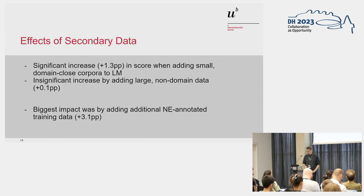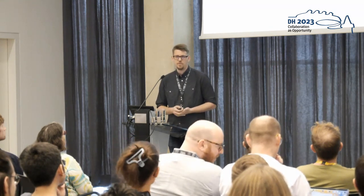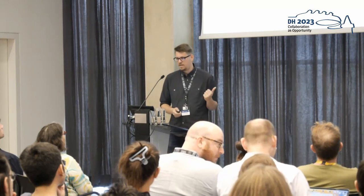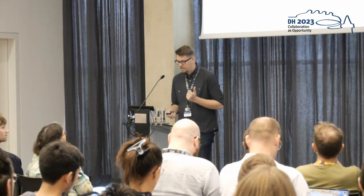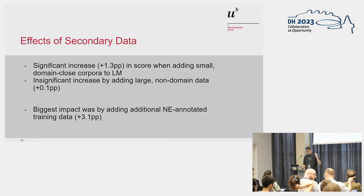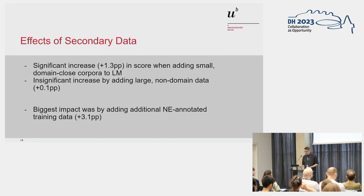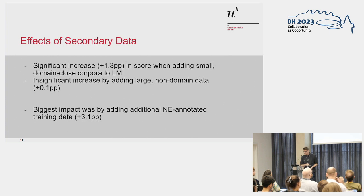So the effects of secondary data: if we apply the small domain-close corpora — the law sources and the court proceedings — we get a decrease of 1.3 percentage points, which is pretty fine. Adding the large non-domain data like Koenigsfelden did basically no increase for us, and even under some parameter settings even a decrease. But the biggest impact, the most important thing, was to just have more named-entity annotated training data. We are a long way away from being at the end of that. Just with this — where we basically tripled the training data using these two additional corpora — we already got a plus 3.1 percentage point score over the baseline.